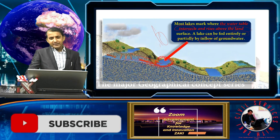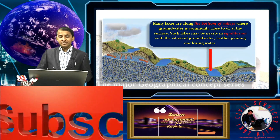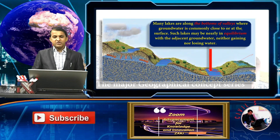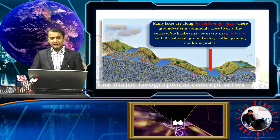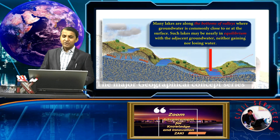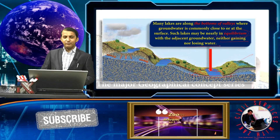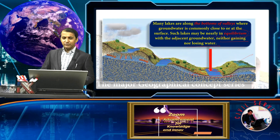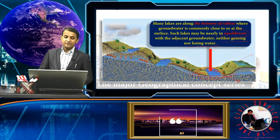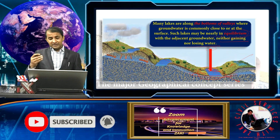Many lakes are found along the bottom of valleys where the groundwater is commonly close to the surface. Such lakes may be in nearly an equilibrium position, meaning the adjacent groundwater is neither gaining nor losing. This is the equilibrium position and this type of lake forms under those conditions.